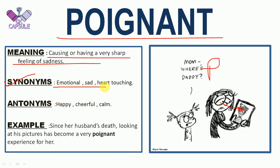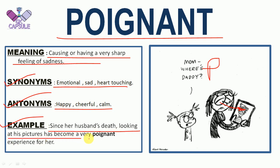Synonyms of POIGNANT: emotional, sad, touching. Antonyms: happy, cheerful, calm. Example: since her husband's death, looking at his picture has become a very poignant experience for her — meaning a very sad experience. So whenever someone is very sad, you can use the word poignant.